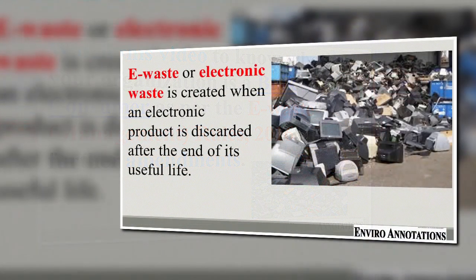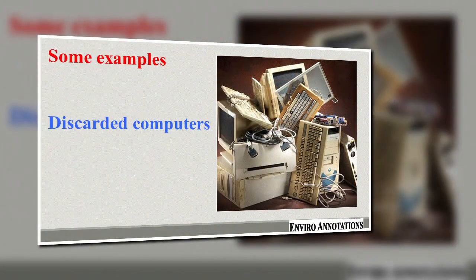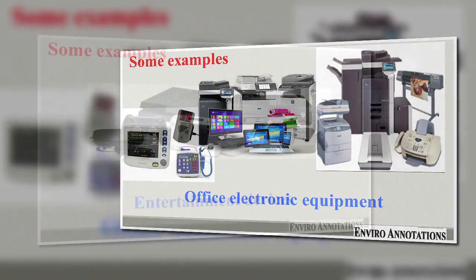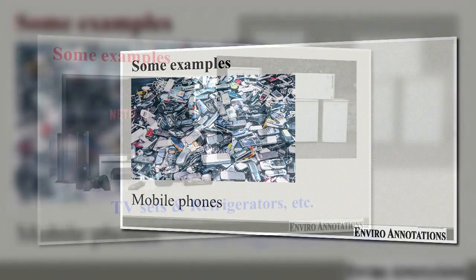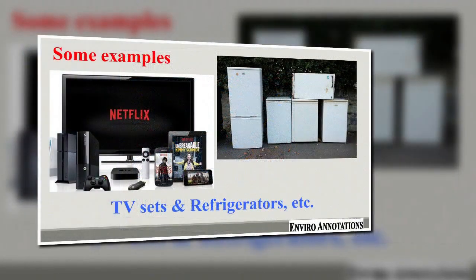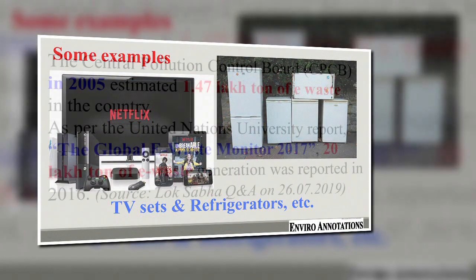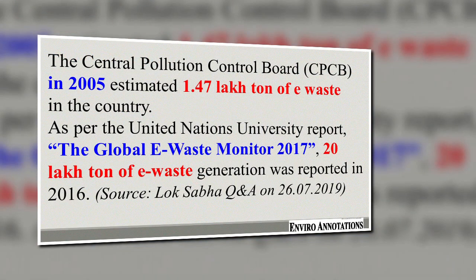E-waste or electronic waste is created when an electronic product is discarded after the end of its useful life. Some examples are discarded computers, office electronic equipment, entertainment devices, mobile phones, television sets and refrigerators. This includes used electronics which are destined for reuse, resale, salvage, recycling or disposal, as well as reusable secondary scraps such as copper, steel and plastic.